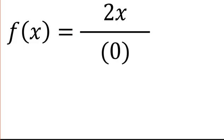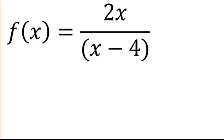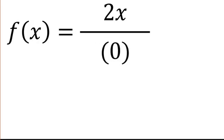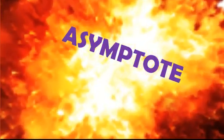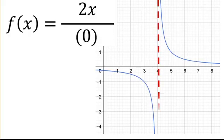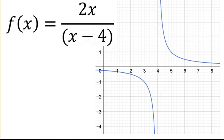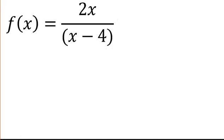Don't divide by zero, it's an asymptote. Don't divide by zero, it's an asymptote. Player, it's an asymptote.